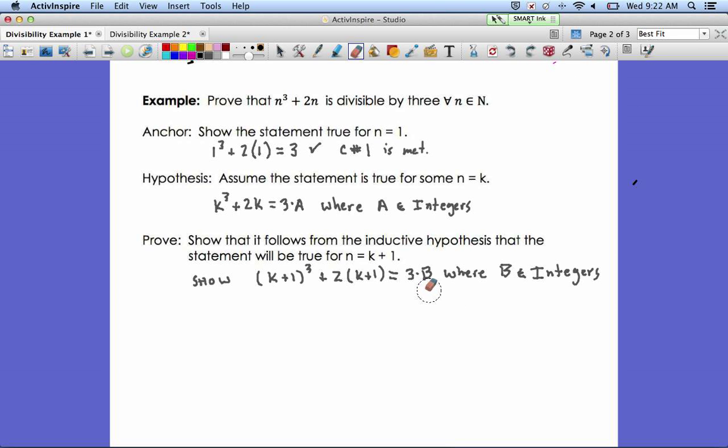The important thing to recognize here is that this letter b isn't going to magically show up in our proof anywhere, but we will get to a point where we're certain that the left-hand side is a factor of 3. So we're going to start with that k plus 1 cubed plus 2 times the quantity k plus 1.